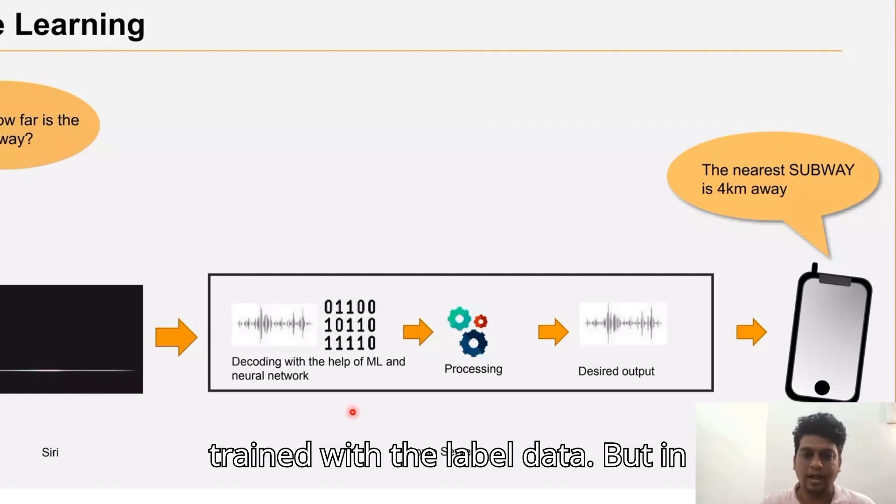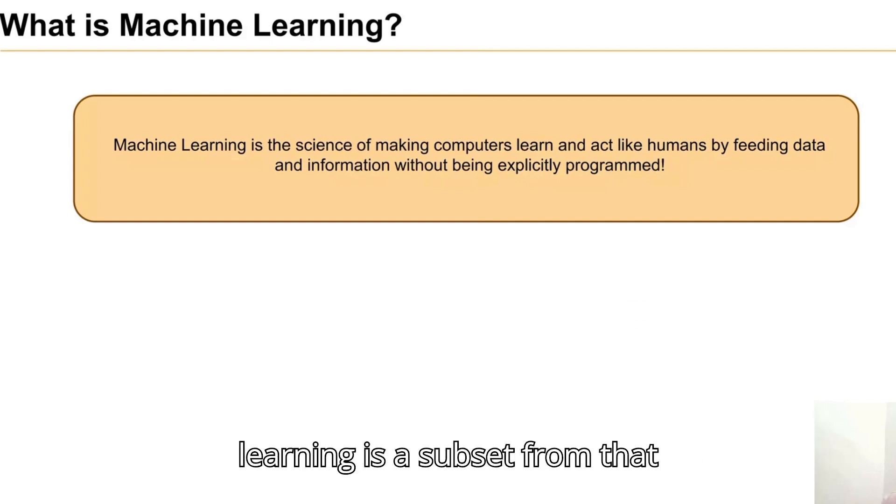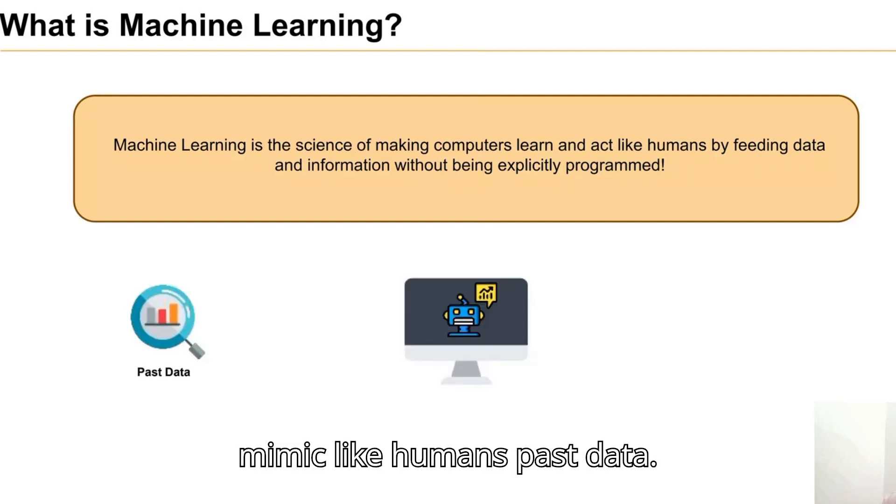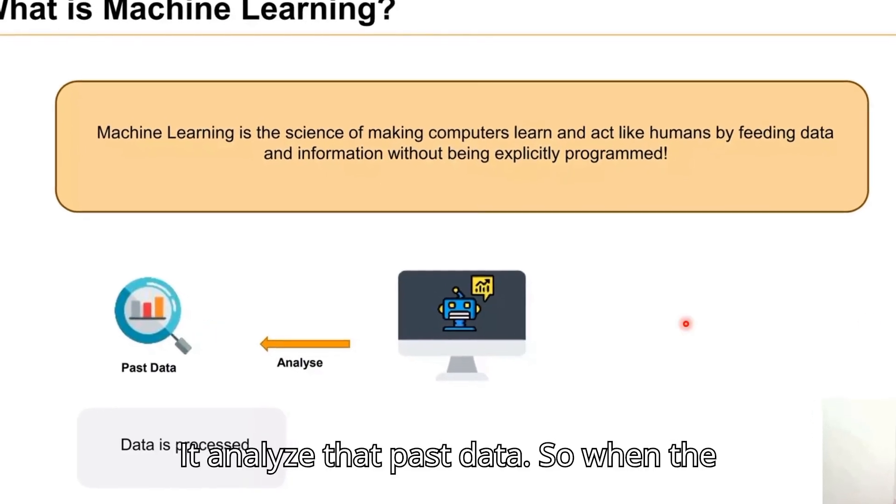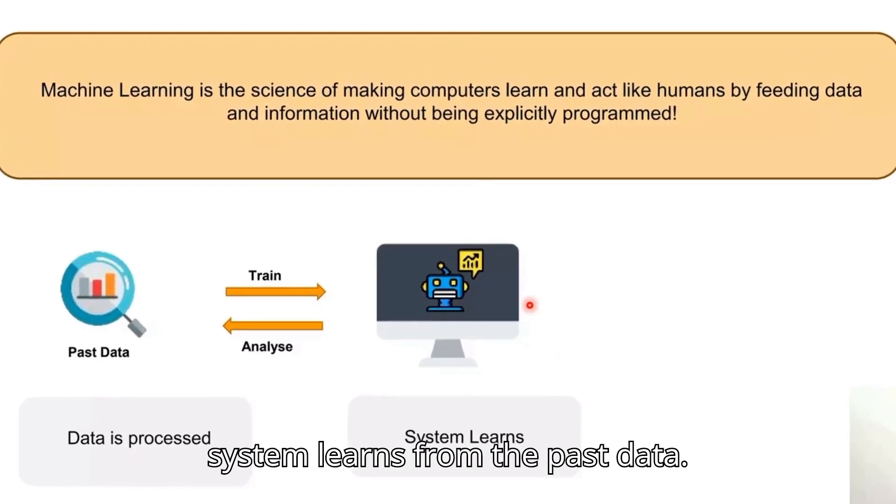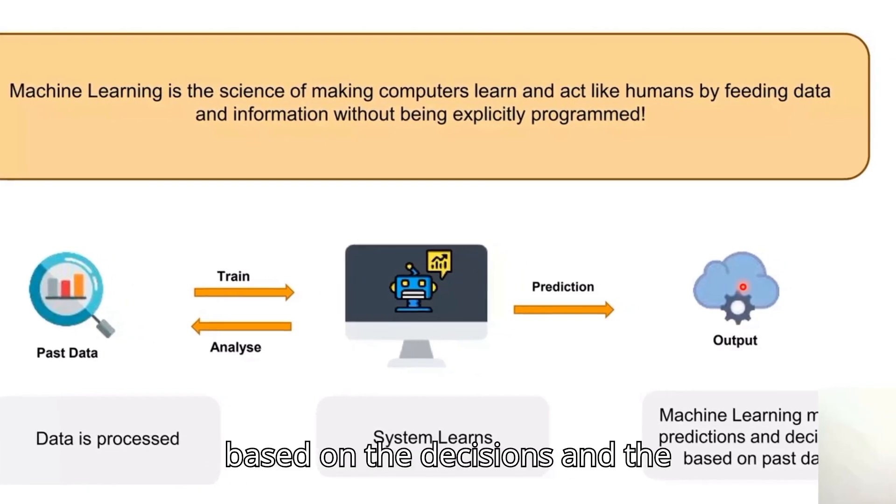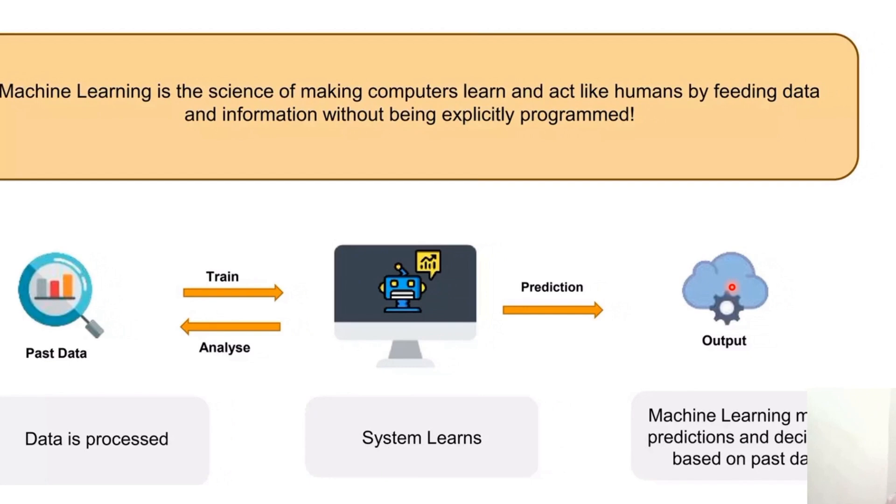In case of unsupervised, we train with unlabeled data. Machine learning is a subset of artificial intelligence that can mimic humans. It analyzes past data, and when new data is processed, the system learns from the past data so it can predict the output based on decisions and past data.